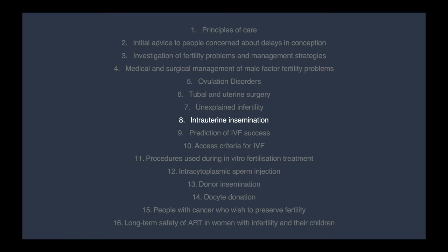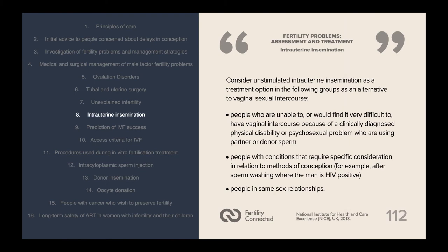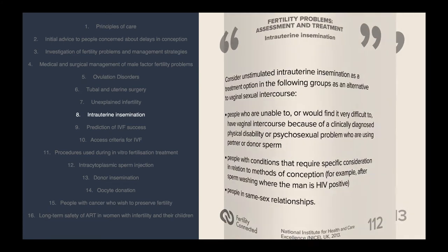Intrauterine insemination is a treatment option for the following groups as an alternative to vaginal sexual intercourse: people who are unable to or would find it very difficult to have vaginal intercourse because of a clinically diagnosed physical disability or psychosexual problem who are using partner or donor sperm; people with conditions requiring specific consideration in relation to methods of conception, such as after sperm washing where the man is HIV positive, and people in same-sex relationships.